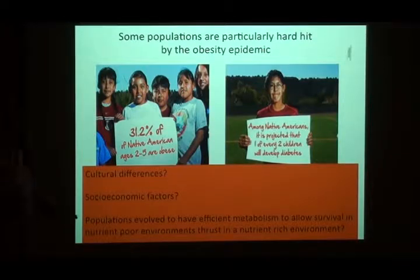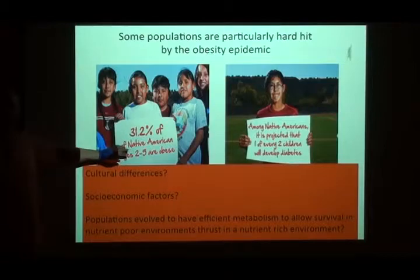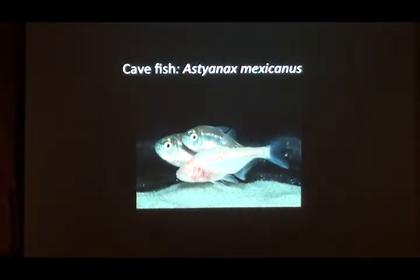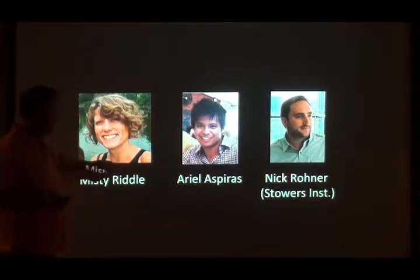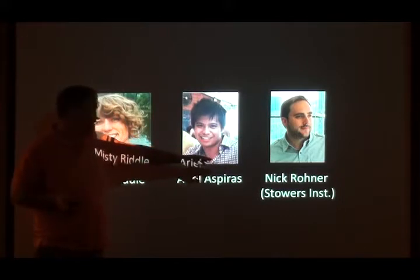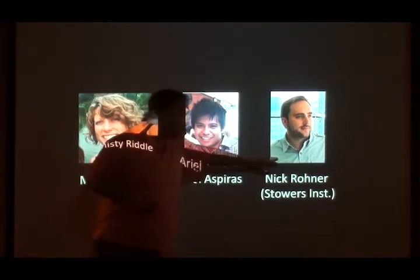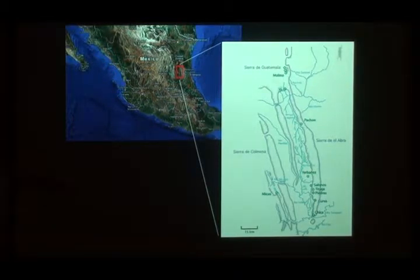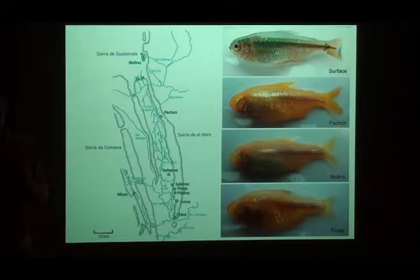You can't easily investigate the environmental and genetic causes of this the same way as with a laboratory animal, and you certainly can't do genetic experiments in humans. So I'm going to switch gears and talk about Astyanax mexicanus — the Mexican cave fish. Fish were swept into caves maybe a million years ago and became trapped. The caves have very similar conditions, so fish in separate unconnected caves evolved under similar selective pressures, developing very similar phenotypes — a beautiful system for studying convergent or parallel evolution.